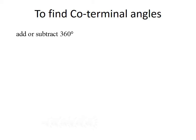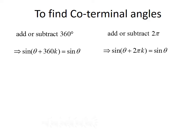To find coterminal angles, if working in degrees we add or subtract 360 degrees — the amount of one revolution. If working in radians, we add or subtract 2π. Since coterminal angles have the same terminal side, they also have the same trig function values. So sine of (θ + 360k) equals sine of θ, and in radians, sine of (θ + 2πk) equals sine of θ.